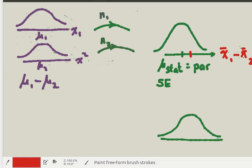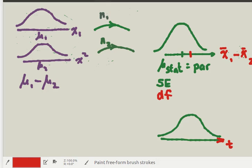Since we're using the difference of means, the distribution will need to be a t-distribution. We'll need to do a t-test, and we'll also need to know the degrees of freedom involved. Using this three-distribution diagram as a guide, let's begin to build our script.